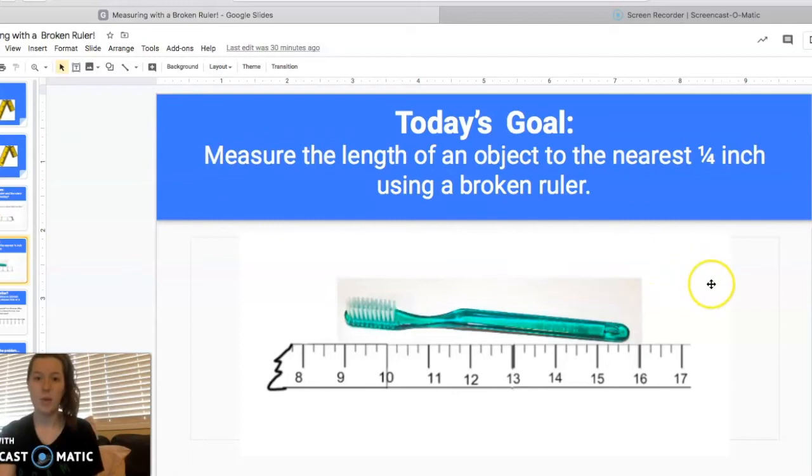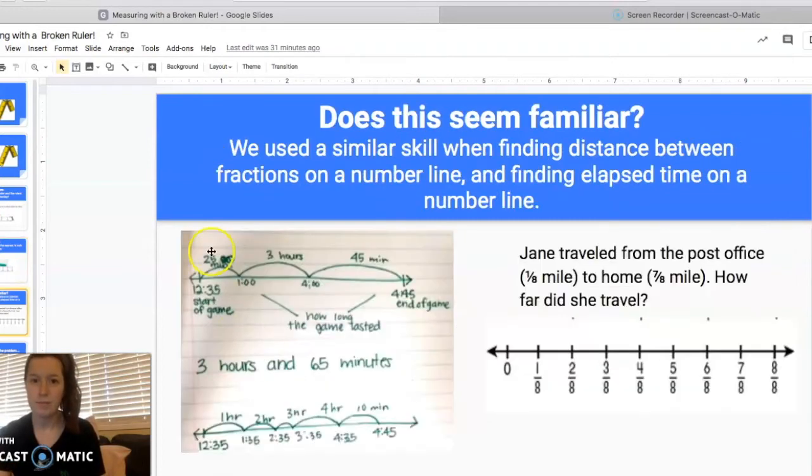So today's goal is to measure the length of an object to the nearest quarter or fourth of an inch using a broken ruler. So this is really similar to what we did yesterday. We're still going to be finding the length or the distance from the start of an object on a ruler to the end of an object on a ruler. The only difference is that we're not starting at zero on the ruler today. Does this seem familiar to you? It does to me.